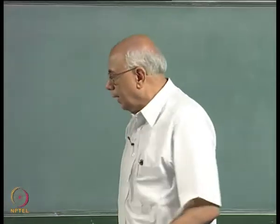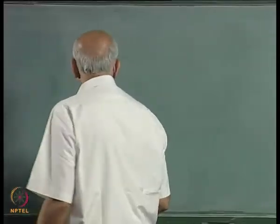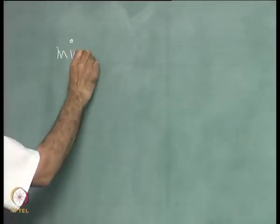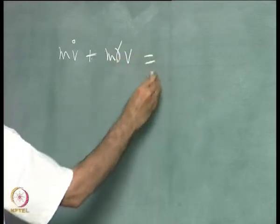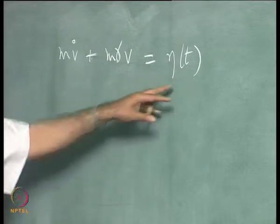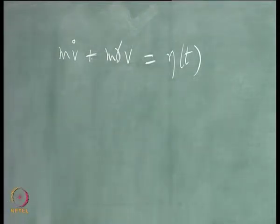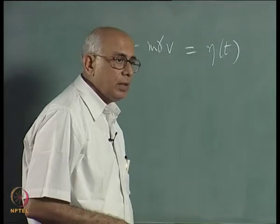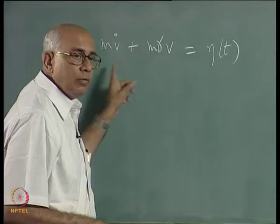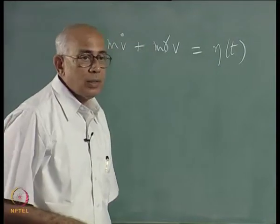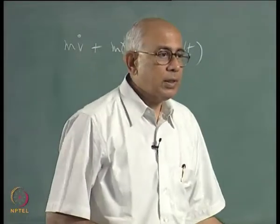We saw yesterday that in the simple Langevin model for diffusion of particles in a fluid, the equation is m·v̇ plus m·γv equal to a white noise η(t). If this is a Gaussian white noise — a random process with a delta correlation, a Markov process which is stationary and has a delta correlation — then the velocity V also turns out to be a Markov process and its conditional density turns out to be the Ornstein-Uhlenbeck distribution.